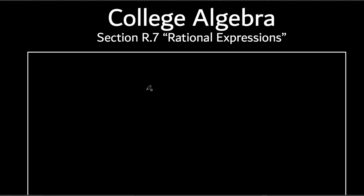Variables — letters — just stand for numbers. They're the same thing as numbers. You can add letters together, multiply, divide. All the same things we do with regular numbers we can do with letters. So we're going to do some stuff with letters and numbers in fractions. Let's take a look at some quick examples of rational expressions.